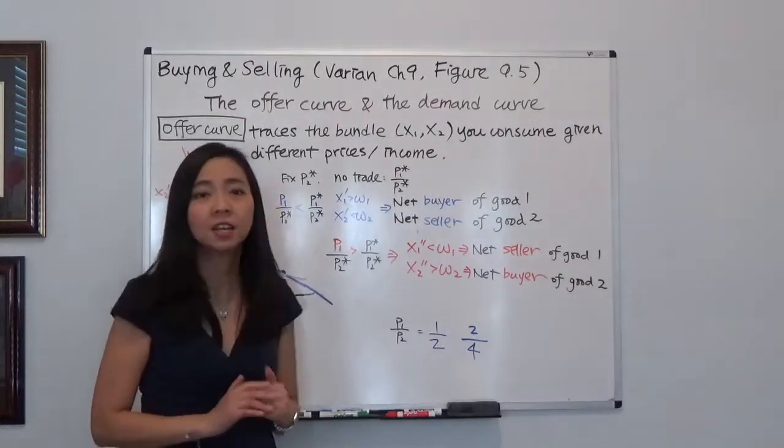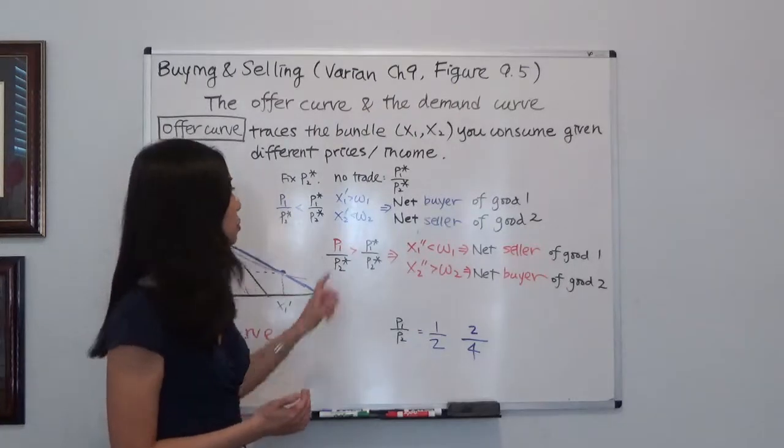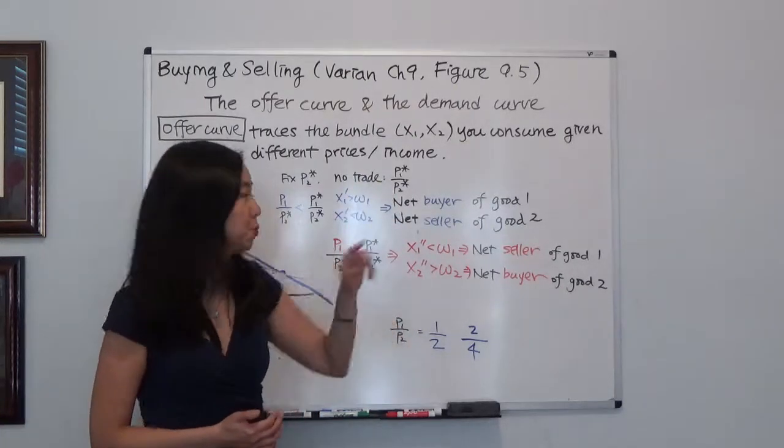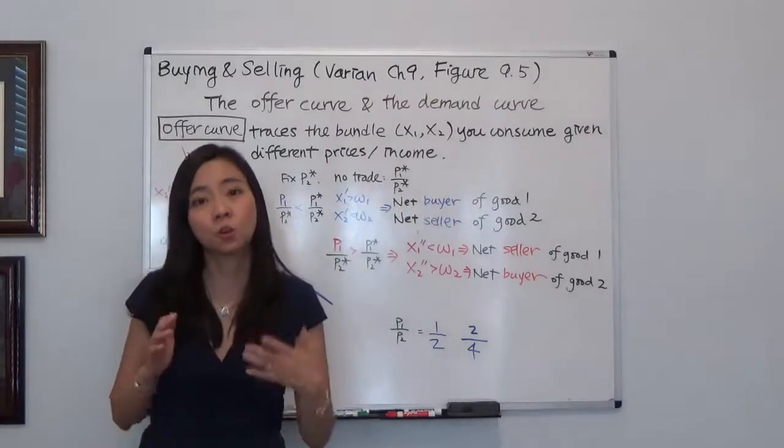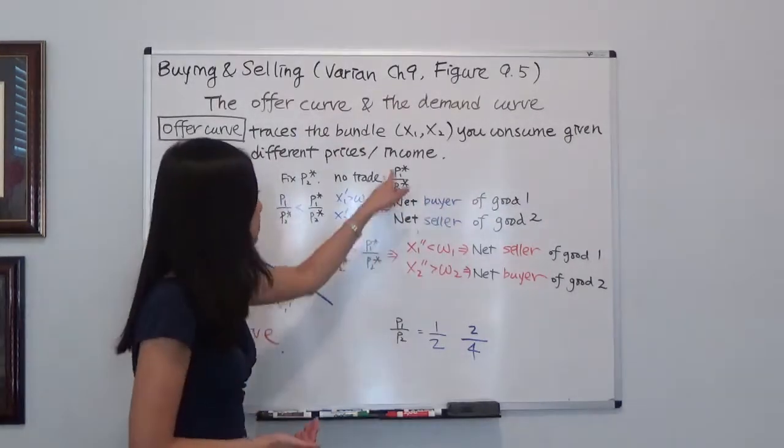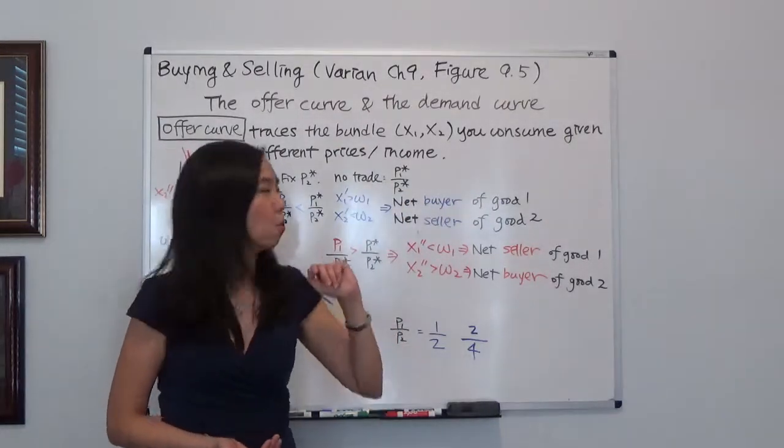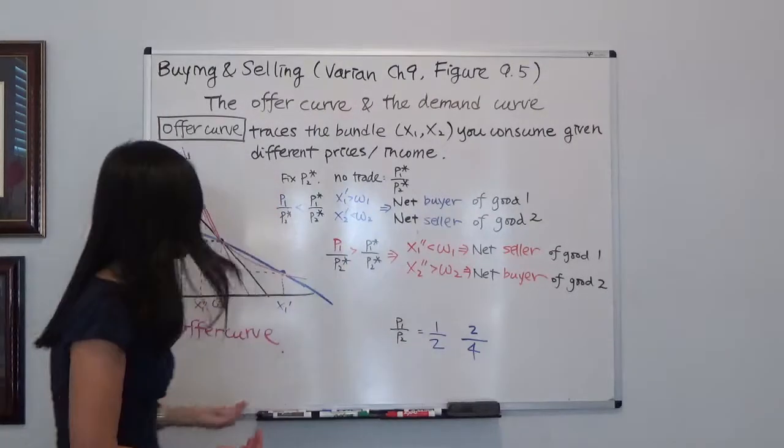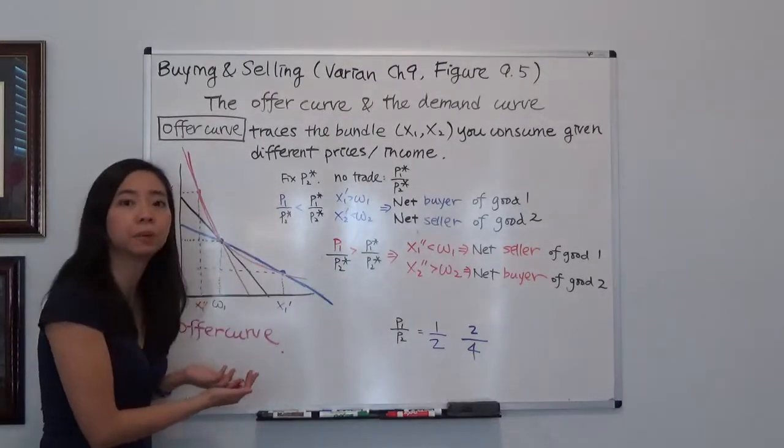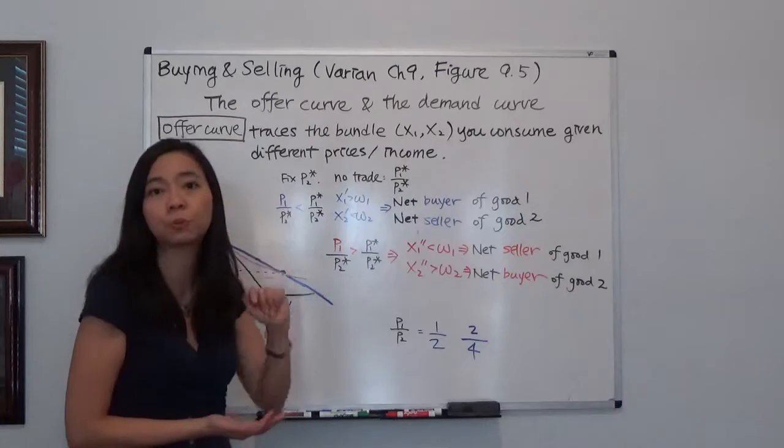So what happens if we fix the price of good 2 at P2 star and we're not going to change it? The only thing we're going to change is P1 star. Then what would happen to our final consumption bundle given that we're changing the price of good 1?